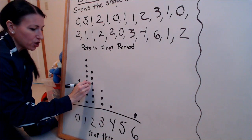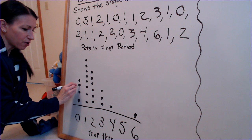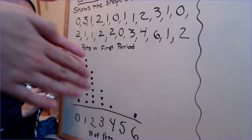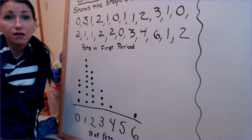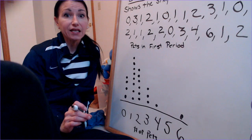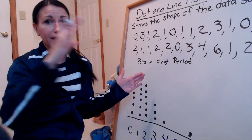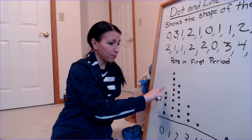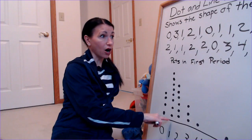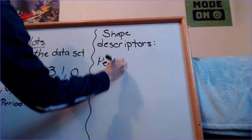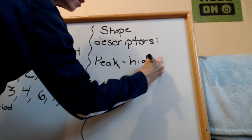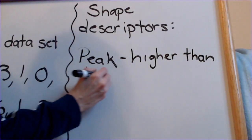Now I'm going to give you six vocabulary words to describe the shape of the data. The first is called a peak. The peak is which bar or column is higher than the one to the right and the left of it. In this data set, number one is our peak — it's greater than, or higher than, its neighbors.